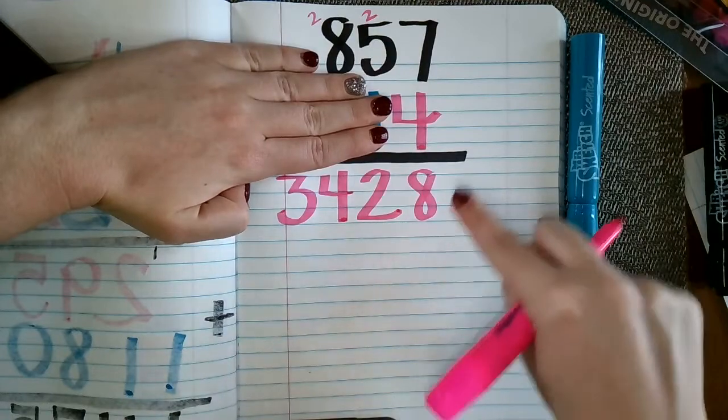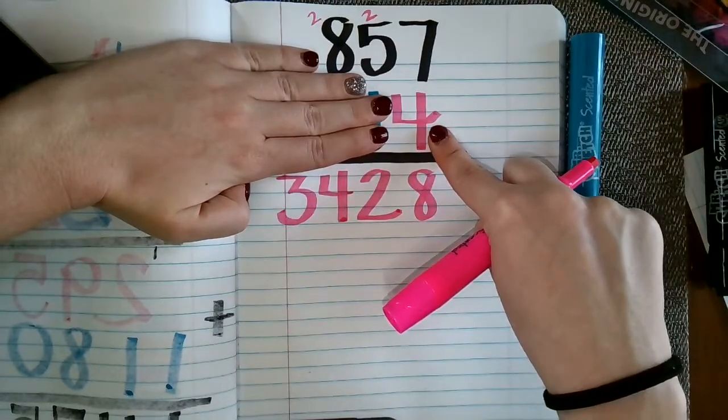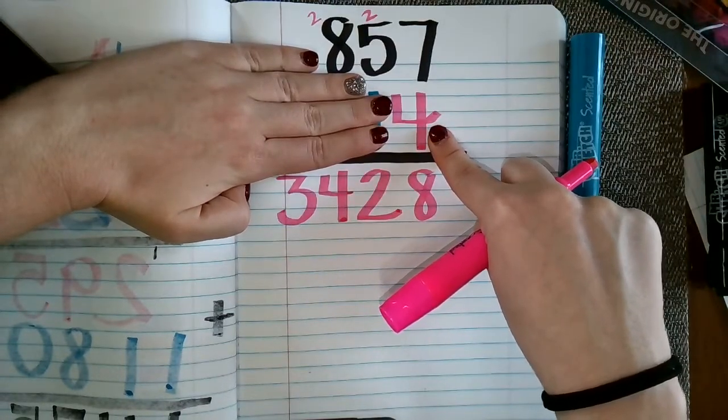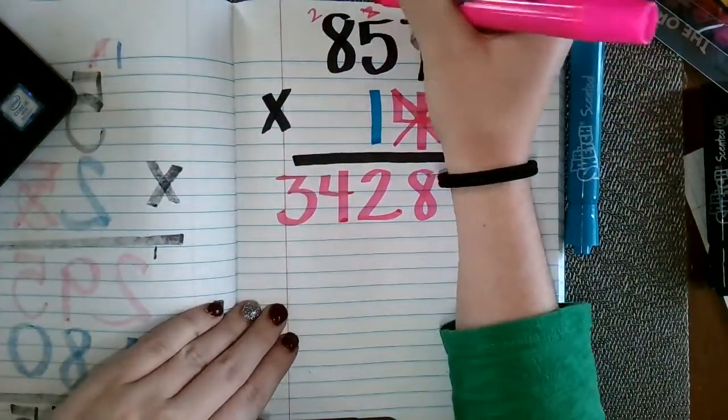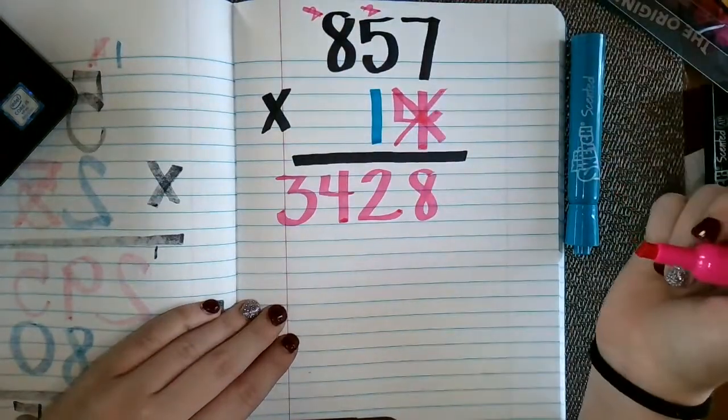All right. So in other words, we are done with the ones place in the number 14. So since we're done with that, I like to cross it out. You can also cross out your twos because we don't need those anymore.